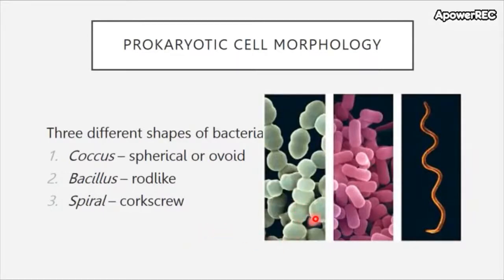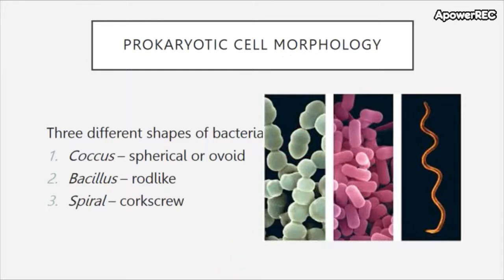Note in this image the coccus on the left-hand side can sometimes have the appearance of a bacillus bacterium. That is due to the fact that this particular bacterium is going through binary fission, and if one looks carefully they will see a little invagination of the cell wall, which indicates that this cell is going through division. Cell morphology is important because it is necessary for the identification of microbes.